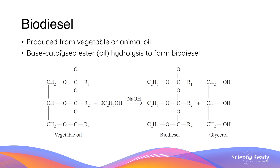Biodiesel is produced from vegetable or animal oil via a base-catalyzed ester hydrolysis reaction, using an alcohol such as ethanol as the other reactant. We will discuss this type of reaction in the ester video.